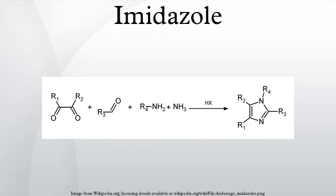Imidazole can also be formed in a vapor phase reaction. The reaction occurs with formamide, ethylenediamine, and hydrogen over platinum on alumina, and it must take place between 340 and 480 degrees Celsius. This forms a very pure imidazole product. The Van-Leusen reaction can also be employed to form imidazole starting from TosMIC and an α-amino compound.